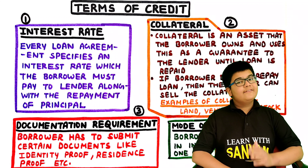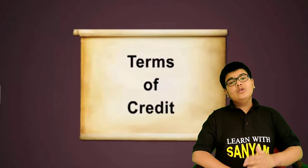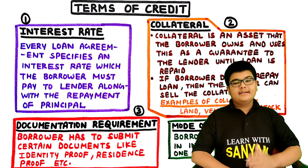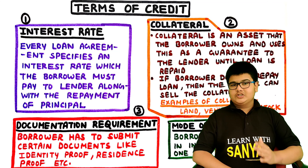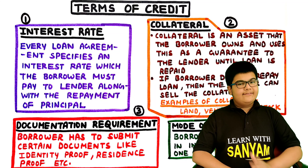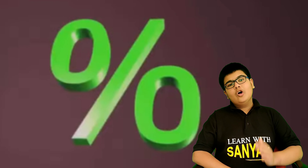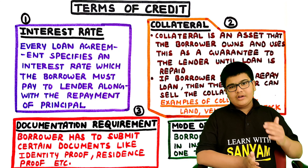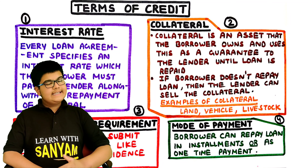Does the bank give a loan to any person, or does it put some conditions on the loan? There are four terms of credit: interest rate, collateral, documentation requirement, and mode of payment, which the borrower has to fulfill before the lender gives the loan. Every loan agreement specifies an interest rate which the borrower must pay to the lender along with the repayment of principal. Apart from the principal amount, the borrower has to give some extra amount as interest. The second term is collateral.